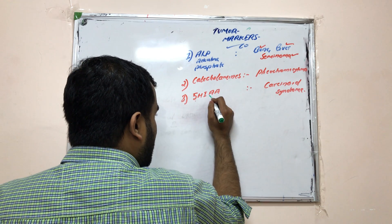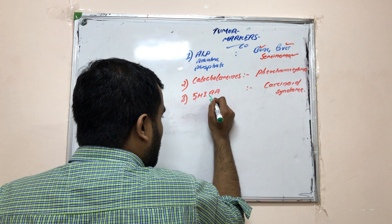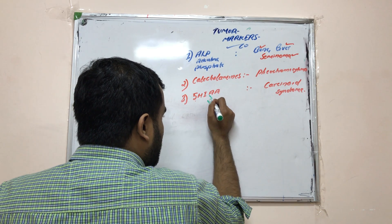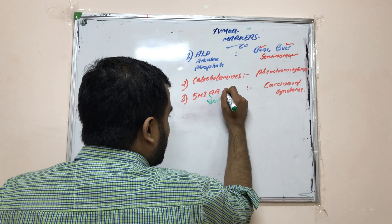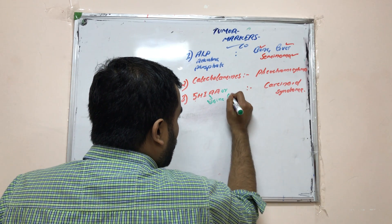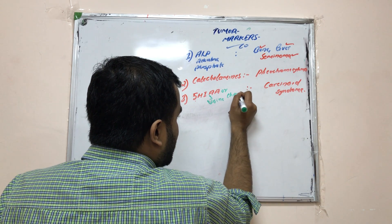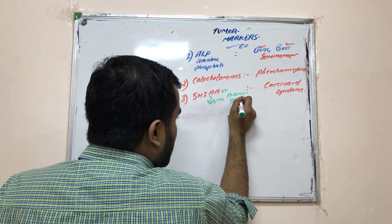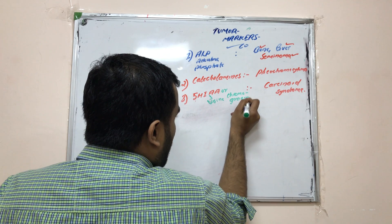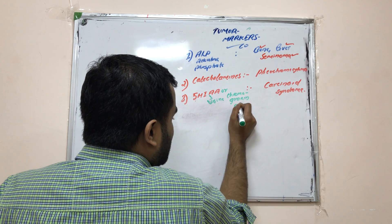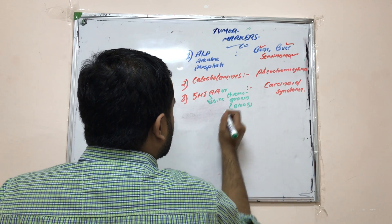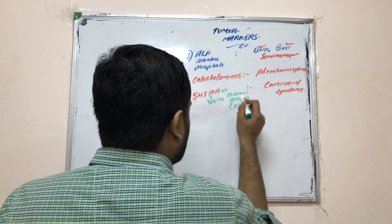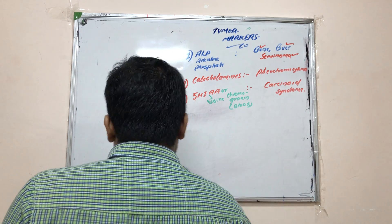5-HIAA can be seen in urine, and chromogranin can be seen in blood. So chromogranin is a blood marker associated with carcinoid syndrome as well.